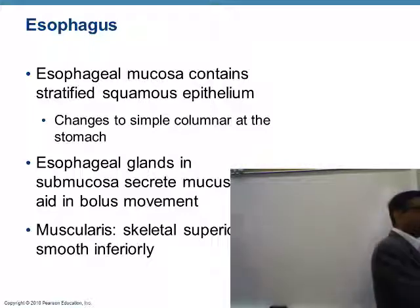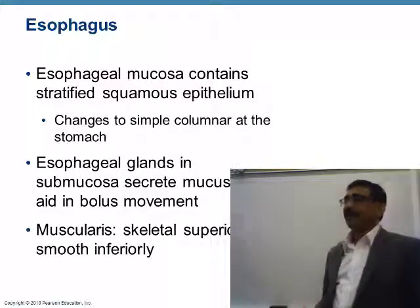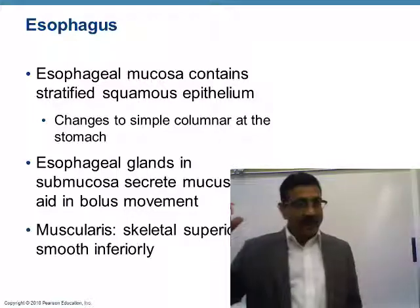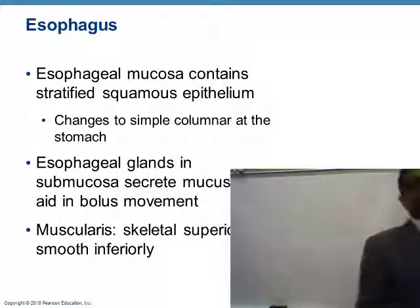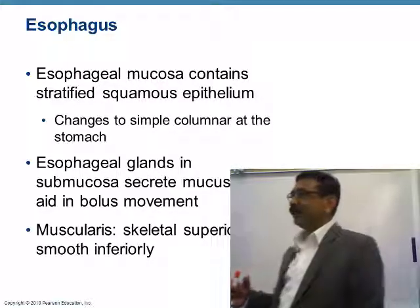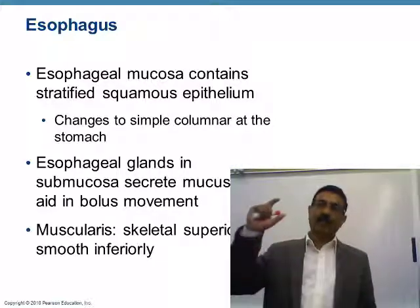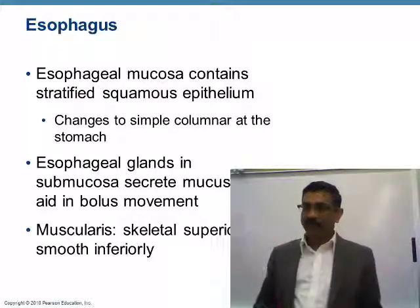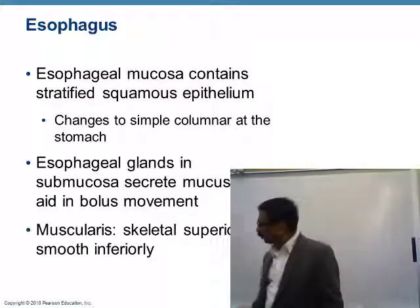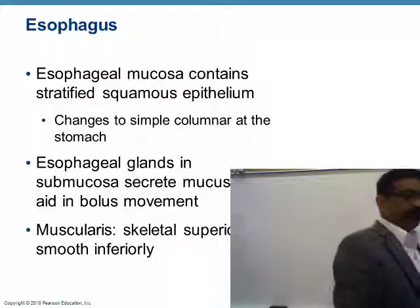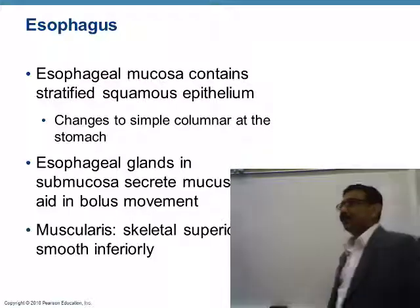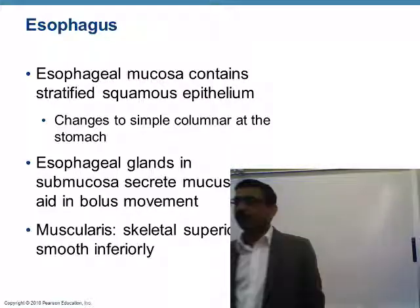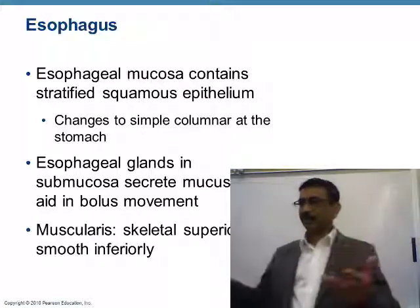In the wall of the esophagus, you have two types of muscles. In the upper part of the esophagus you have skeletal muscle, and in the lower part you have smooth muscle. The contraction of muscle causes peristalsis-type movement in the esophagus — a wave-like movement, one after another, like a ring moving through a tube.